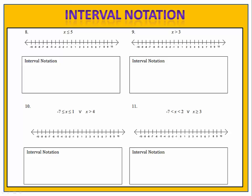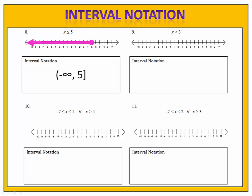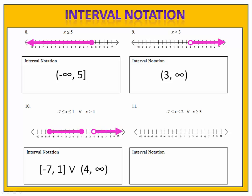In exercises 8 through 11, we have sets given as inequalities. Can you graph these on a number line and then write the set using interval notation? In exercise 8, x is less than or equal to 5 — that's from negative infinity to positive 5. Remember, whenever you use an infinity symbol, use a parenthesis. Number 9: x is greater than 3, from positive 3 to infinity. Exercise 10 has two pieces: between negative 7 and 1, or from 4 to positive infinity — we graph each piece and write each corresponding part in interval notation. Finally, number 11: from negative 7 to 2, or from 3 to positive infinity.